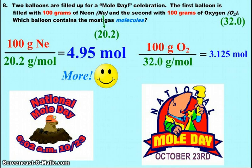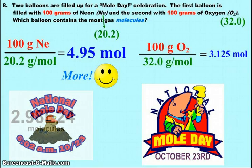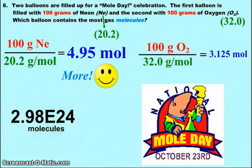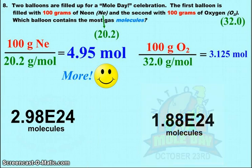Well, when I take 100 grams for neon divided by its molar mass, I have 4.95 moles. 100 grams of oxygen divided by its molar mass, 3.125 moles. More moles, more particles. Less moles, less particles. So you could stop there and totally prove that. If you wanted to go the extra step and multiply and figure out the number of particles, okay. So for neon, 2.98 times 10 to the 24th. For oxygen, 1.88 times 10 to the 24th. So either way, stopping at moles or going to molecules, you'll find that there's more particles in the neon-filled balloon.